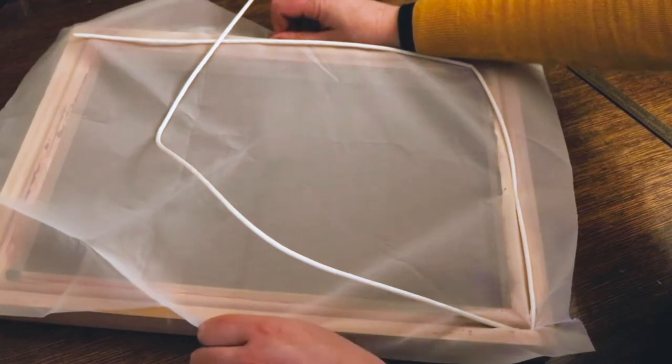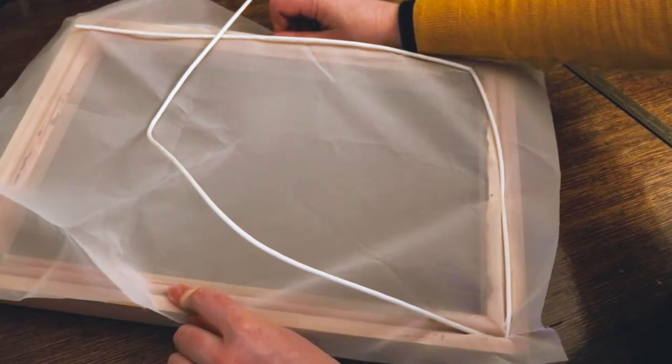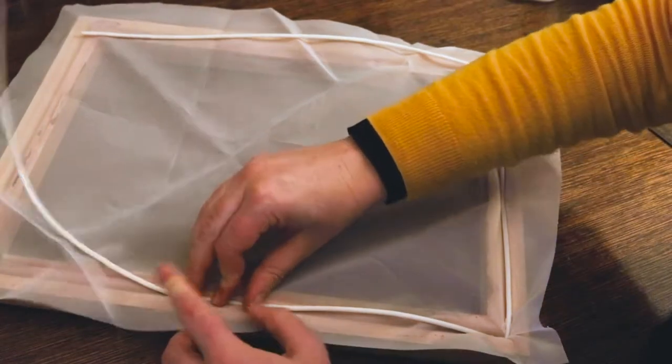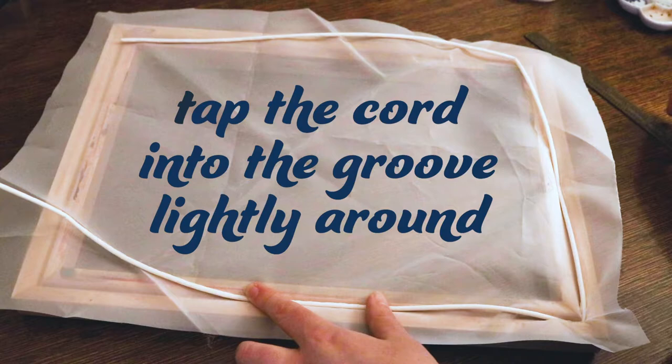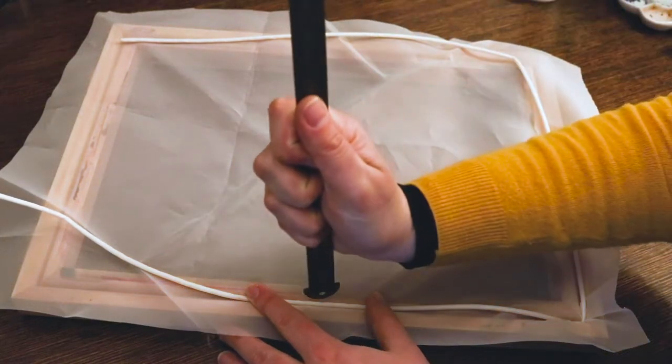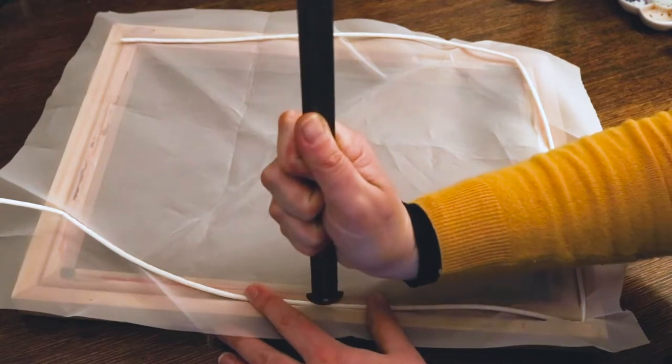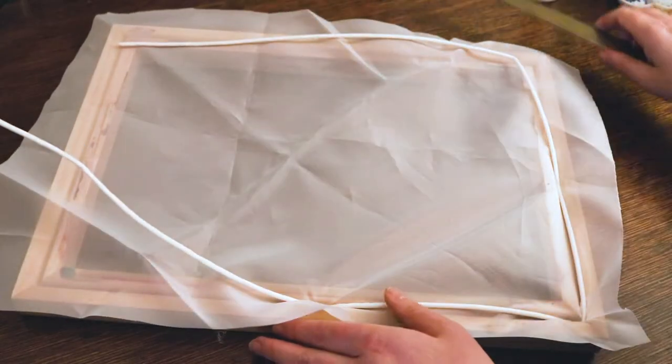Some people like to start at the top of each corner and pin each corner in place and then move around the frame. But I like to do this in the same way that I would stretch a painting canvas, which is to start at the centre of each edge and work my way backwards and forwards all the way around the frame so that the mesh is being stretched evenly.